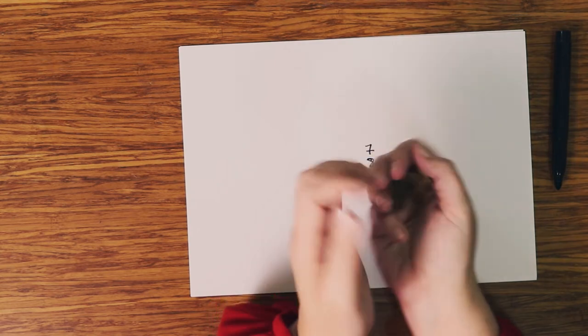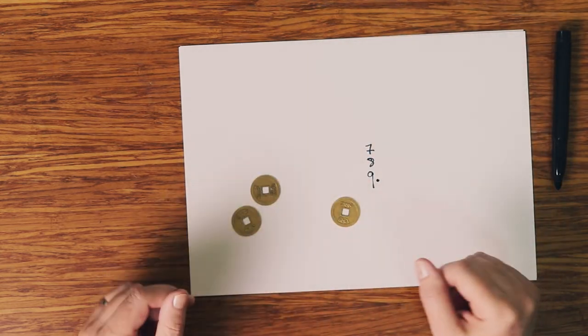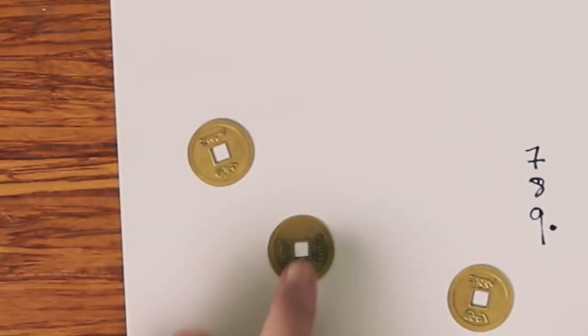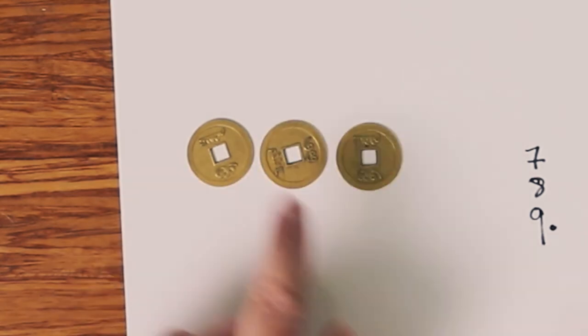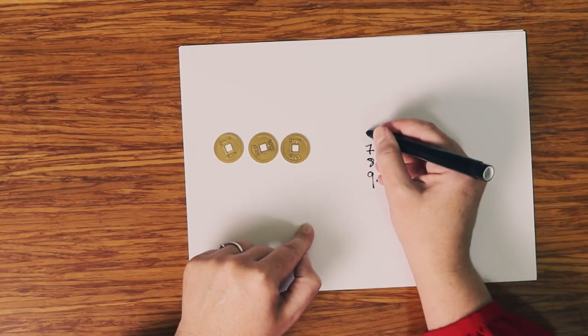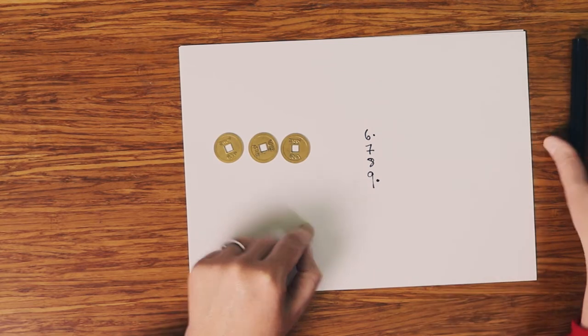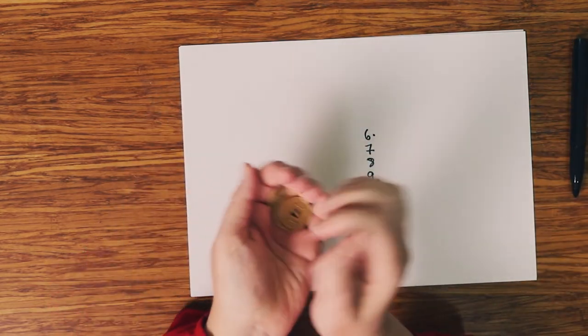Only when there's a six or a nine do we do the dot. Here we go again. Two points female, two points female, two points female. Two, four, six. We've got a six, so we're going to put a dot.